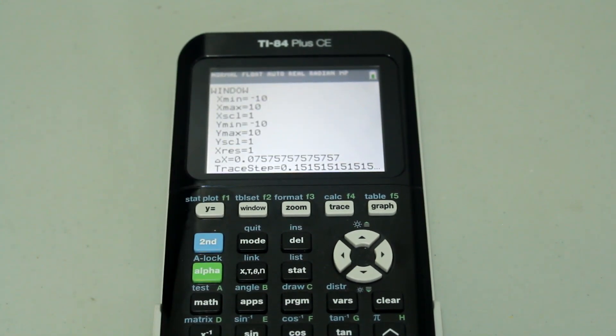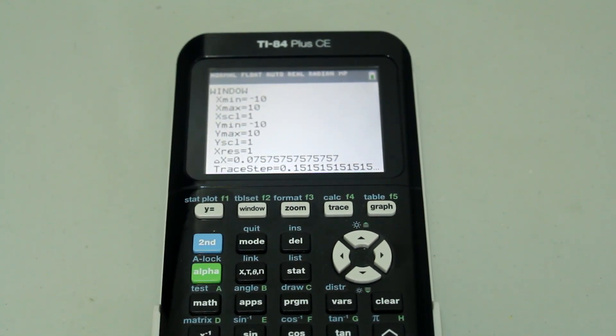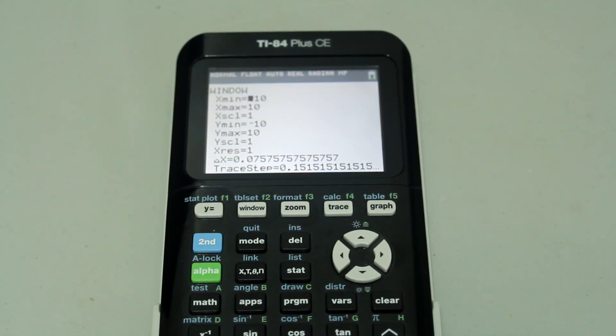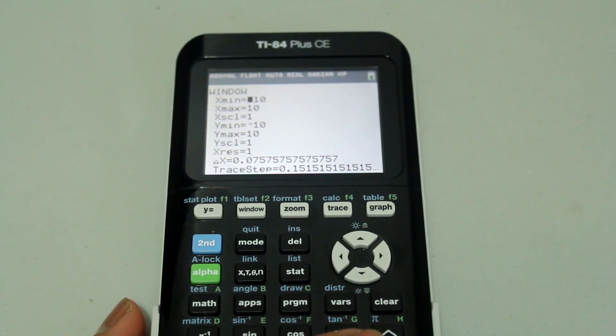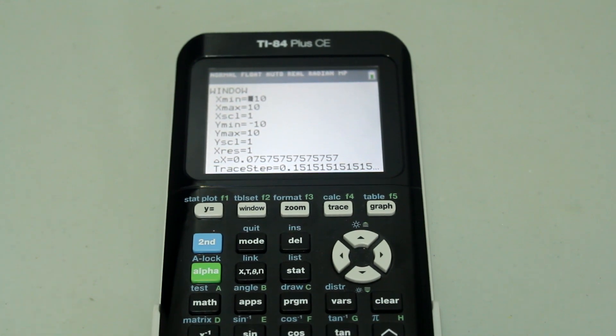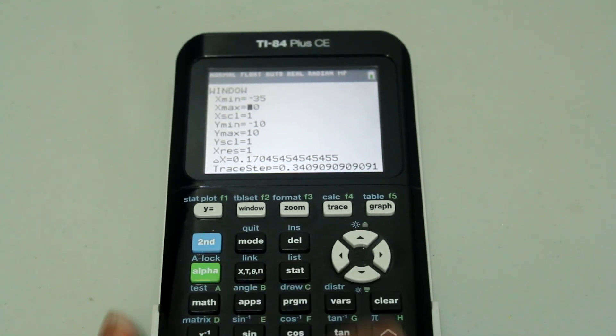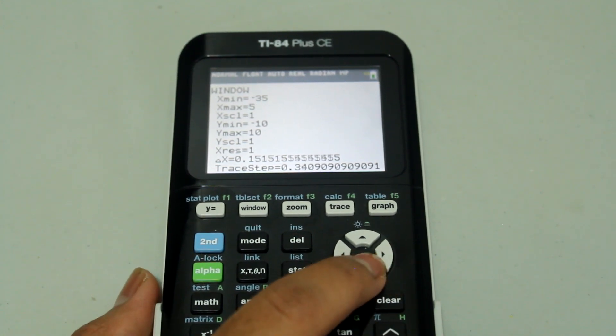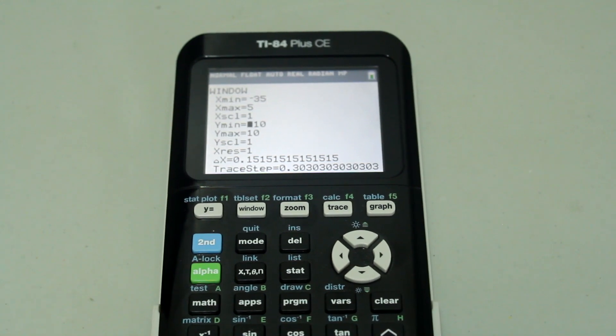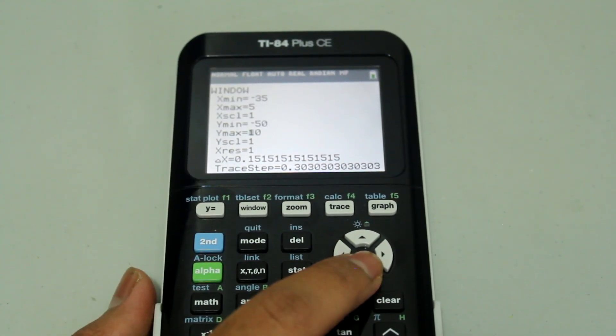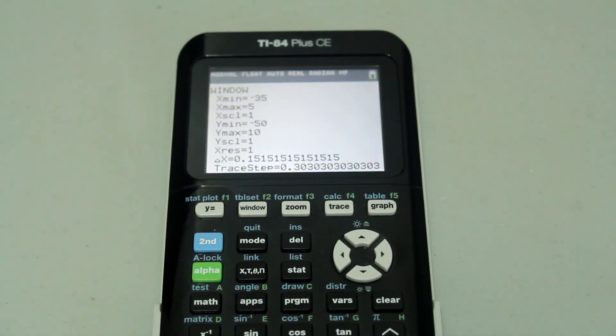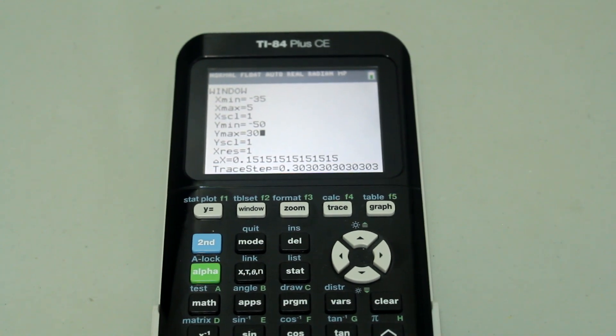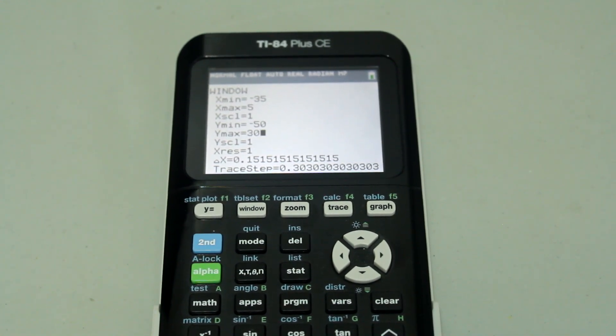Right now I have the standard graphing window on there and let's change the X and Y maximum and minimum values. So I'll change the X minimum to negative 35, change the X max to positive 5, change the Y minimum to negative 50 and change the Y maximum to positive 30. Let's leave everything else the way it is.